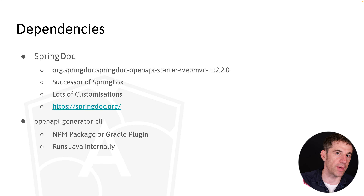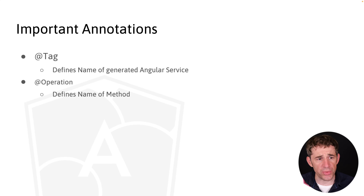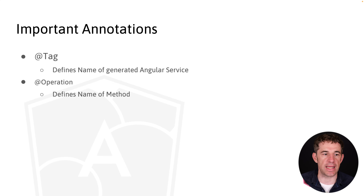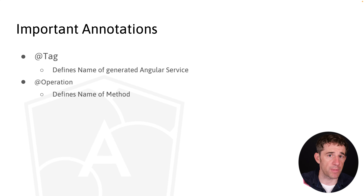The generator connects to the endpoint that SpringDoc provides, fetches the specification, and generates the Angular module. There are two very important annotations I would heavily recommend: @Tag and @Operation. With @Tag applied to the controller class, we can define the name of the Angular service. With @Operation on a method, we can define the name of the Angular service method. If we don't want the service called 'HolidaysControllerService', we just use @Tag with whatever name we want. The @Operation annotation uses an operation ID, which must be globally unique across the entire application.